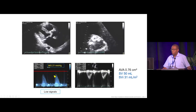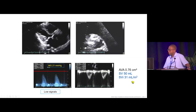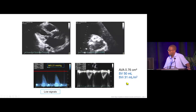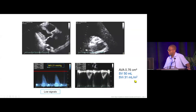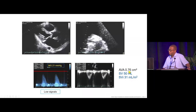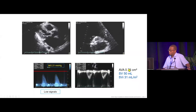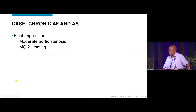However, the mean gradient was only 21 mmHg across the aortic valve — because the patient had low flow. The stroke volume index was below 35 mL/m², considered low flow. Despite the aortic valve area being well below 1 cm², the mean gradient was just 21 mmHg, so the final impression was moderate aortic valve stenosis.